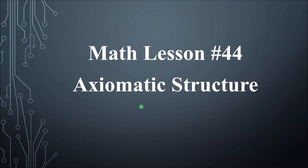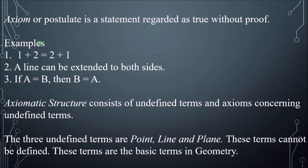Math lesson number 44: Axiomatic Structure. An axiom or postulate is a statement regarded as true without proof. Examples of axioms are: 1 plus 2 is equal to 2 plus 1, which is true without any proof; a line can be extended to both sides; and if A is equal to B, then B is equal to A. These are all true without any proof.